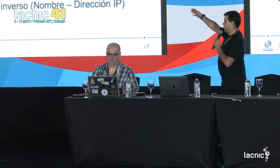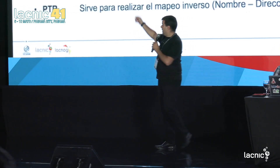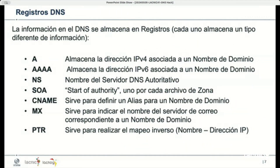Las siete que están acá en la presentación son probablemente las más utilizadas y las básicas. Las dos primeras, el registro A y el cuádruple A: el A para asociar un nombre de dominio a una dirección IPv4, el cuádruple A para asociar a una dirección IPv6. Esos son los registros más utilizados en el DNS y fundamentalmente el motivo por el cual se inventó el DNS: asociar o traducir un nombre de dominio a una dirección IP.